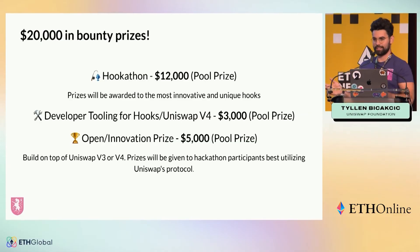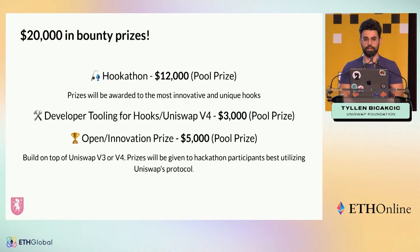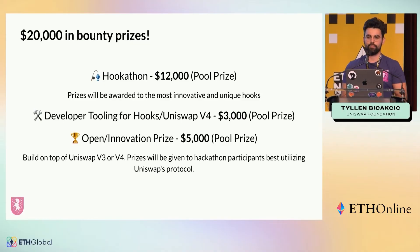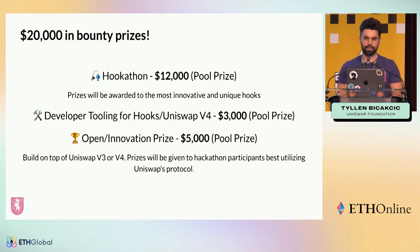That's Uniswap v4 and what we're doing with hooks. We have $20,000 in bounties for people looking to build on top of hooks — we call it our hook-a-thon. We're giving a $12,000 pool prize to people building innovative, unique hooks we haven't seen before. Since this has really only been out for two months, the world is your oyster in how you build out these hooks. We're also looking for help with developer tooling and anything that improves the developer experience, with $3,000 in pool prizes — probably two to three prizes — for that.